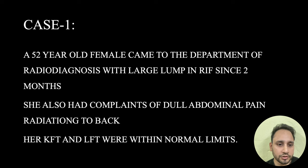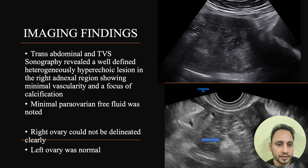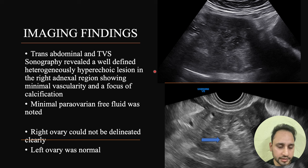Case 1. A 52-year-old female came to the Department of Radiodiagnosis with a large lump in the right iliac fossa since 2 months. She also had complaints of dull abdominal pain radiating to the back. Her KFT and LFT were within normal limits. Imaging findings: transabdominal and TVS sonography revealed a well-defined heterogeneously hyperechoic lesion in the right adnexal region showing minimal vascularity and a focus of calcification. Minimal paravarian free fluid was noted. The right ovary could not be delineated clearly and the left ovary was normal.